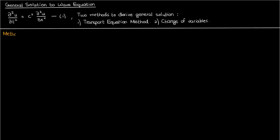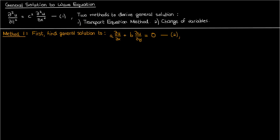The first stage of this longer technique requires that we find the general solution to this first order PDE: a times the partial of u with respect to x plus b times the partial of u with respect to y equals 0, where a and b are just constants.